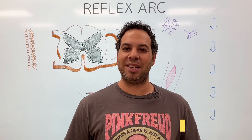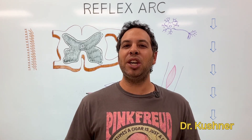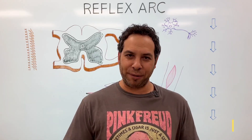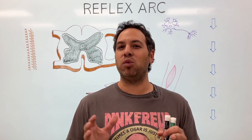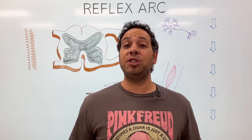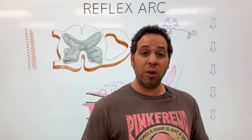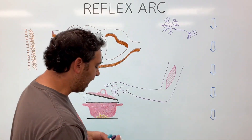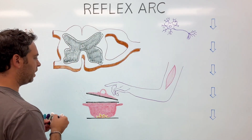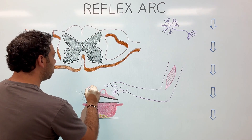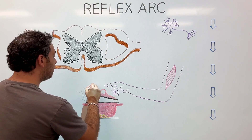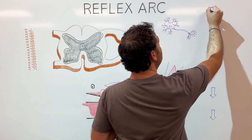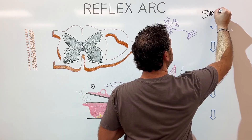Welcome to Psych Explained. In this video, we're going to talk about the neural pathway that controls a reflex, or more specifically, a reflex arc. We're going to start our journey with a scenario we've all experienced, which is touching something hot — in this case, a hot stove. We're going to number this so we can think about the sequential part of this process, and the stove is going to be number one, labeled as the stimulus.